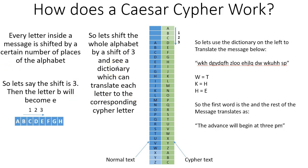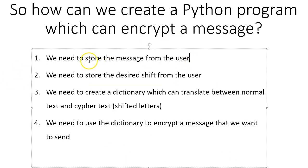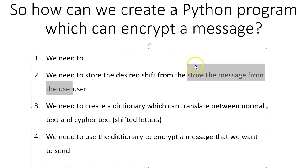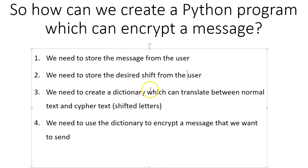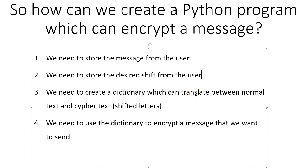So how do we look at creating an algorithm which can do this for us? First of all, we're going to need to take in and store a message from the user. Then we're going to need to take a desired shift, because you don't want to use the same shift — people may figure out the pattern, so you want to change the shift with the message. Then you're going to need to create a dictionary which can translate between normal text and ciphertext.